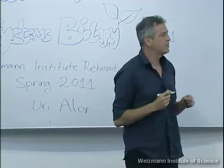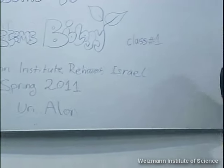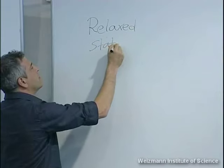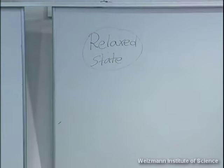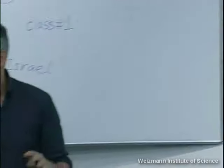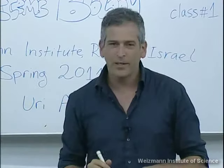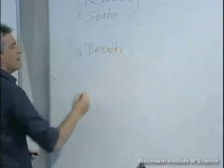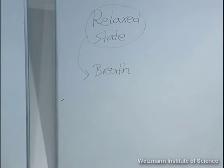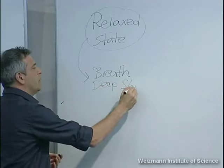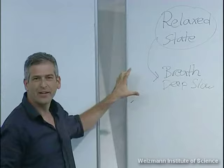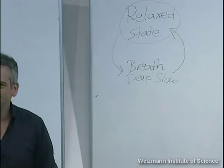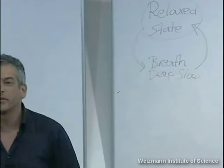I want to introduce the first feedback loop. You might be familiar with our state as a human being called the relaxed state, where we're open, memory works, we're not worried. This comes together with many physiological changes, among them breathing. What's the breathing like when we're relaxed? Deep and slow, right? Research has shown that there's another arrow: if you breathe deep and slow, you increase the probability that you'll enter the relaxed state. So we're going to experiment with this feedback loop during this class.